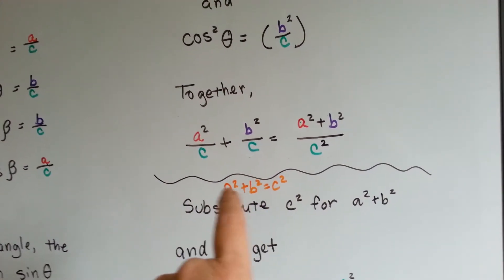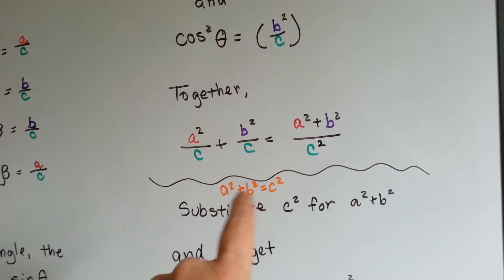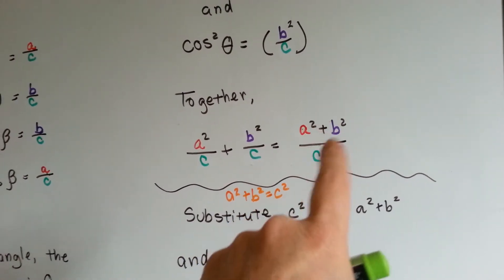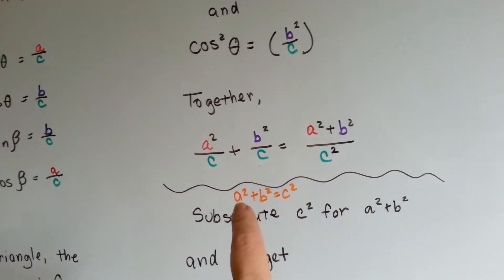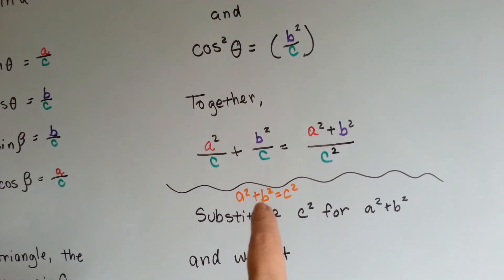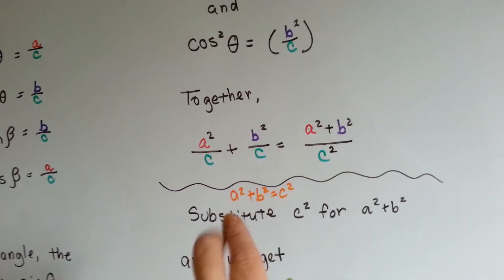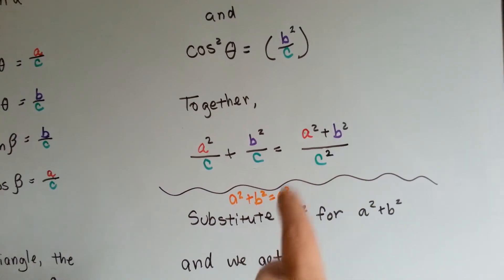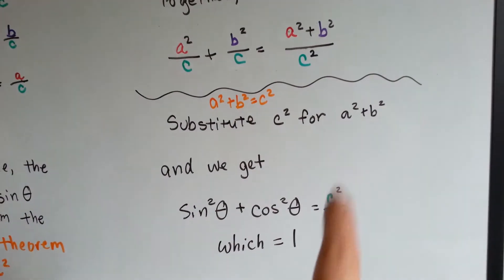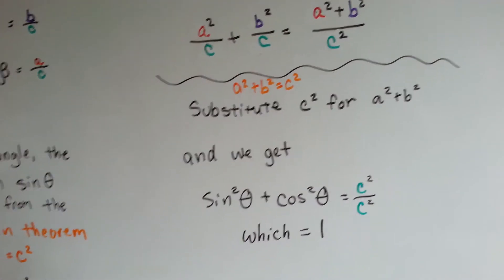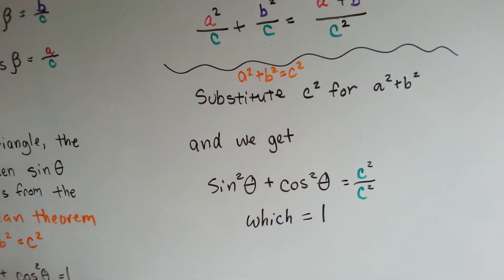Well, remember our little orange thing here, the Pythagorean theorem says A squared plus B squared equals C squared. Well, if A squared plus B squared equals C squared, then this up here equals C squared, doesn't it? It says A squared plus B squared equals that, C squared. So, let's take away this A squared plus B squared and put C squared in its place. Do you know what happens when you've got the identical thing on the top and the bottom of a fraction? It ends up equaling one, doesn't it?